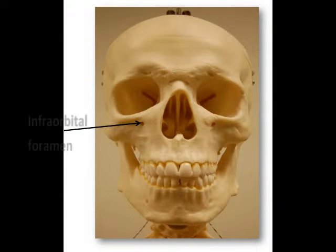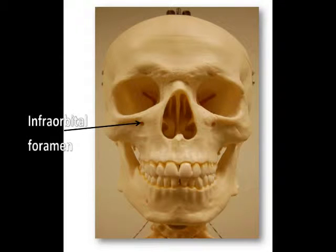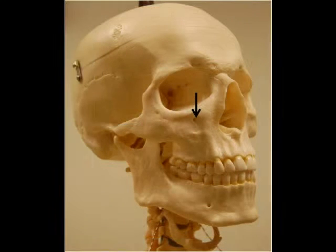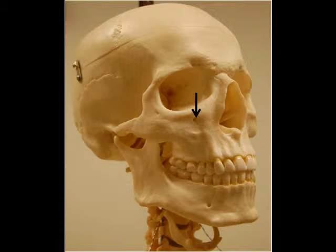Just inferior to the orbit is an opening called the infraorbital foramen, which allows passage of the infraorbital blood vessels and nerves, which is a branch of the maxillary division of the trigeminal nerve, cranial nerve 5.